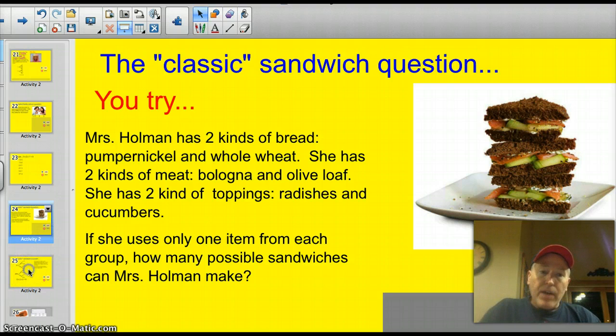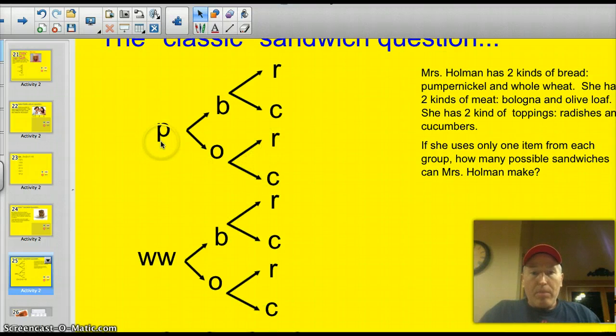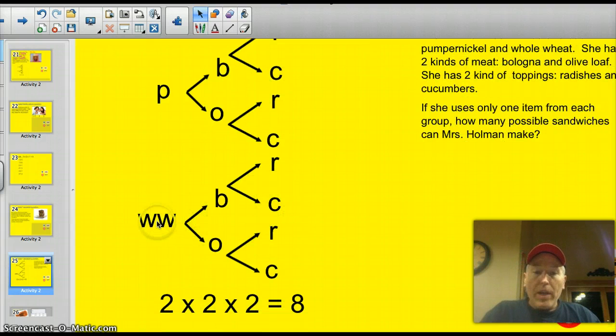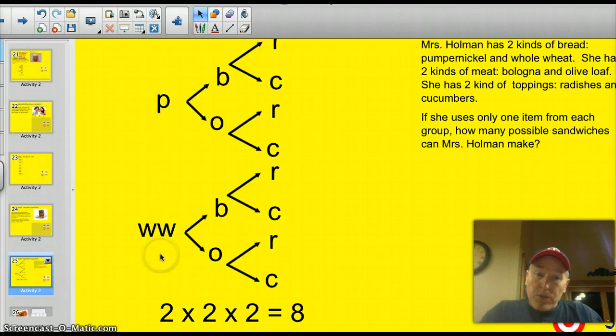All right. Well, if you followed my advice, you made a little tree diagram, and you put a P for pumpernickel, and it could be bologna or olive loaf. Disgusting. It could be radishes, cucumbers, radishes, or cucumbers. So, it could be pumpernickel, bologna, radish, pumpernickel, bologna, cucumbers. You get the idea. Same thing down here for the whole wheat. Whole wheat, olives, cucumbers. Whole wheat, olives, radishes. Now, there's a tasty sandwich, not. There's a total of eight combinations, because she has two here, two types of bread, two types of topping, or meats, and two types of veggies, or toppings that could go on. Okay? I think you're ready for the target.